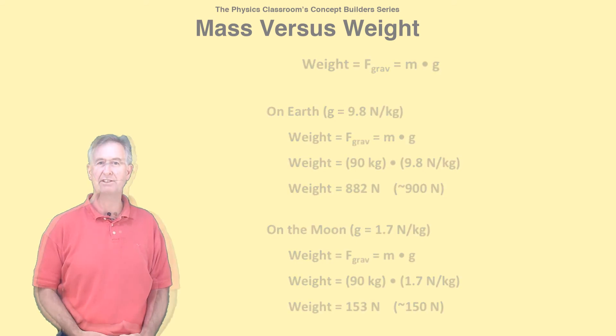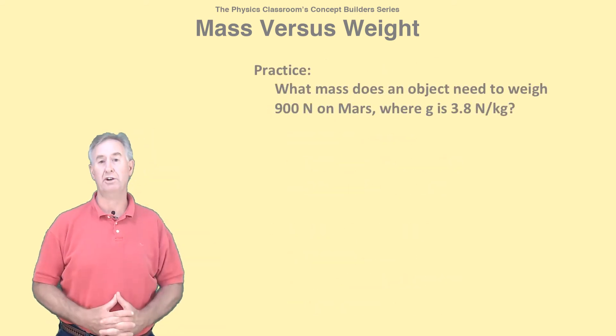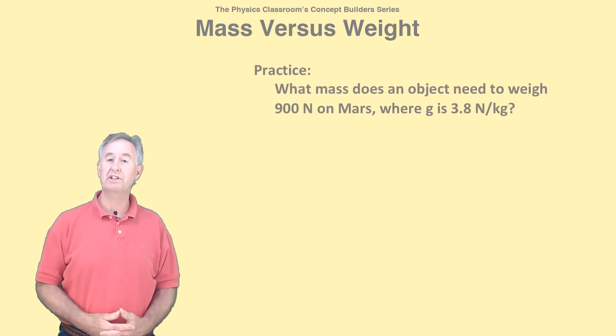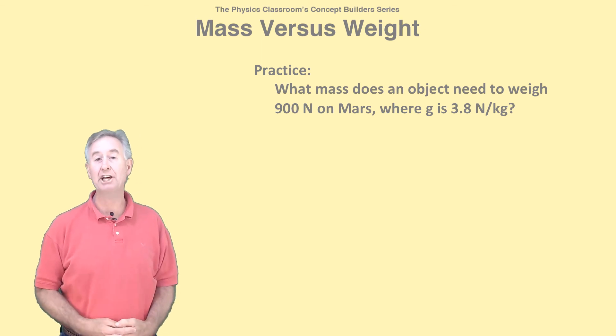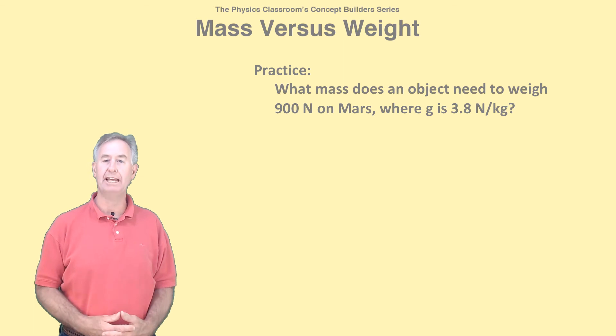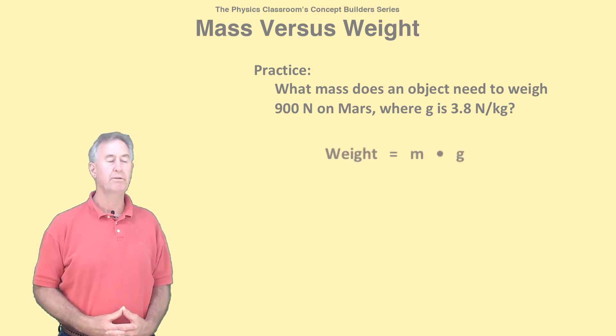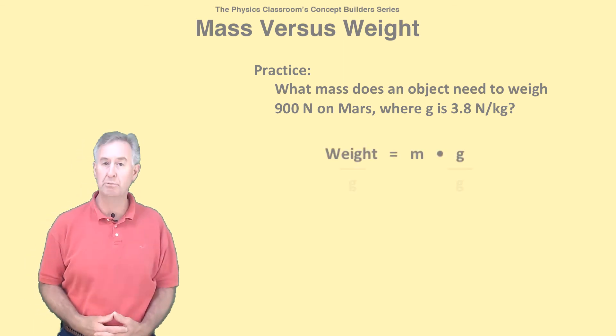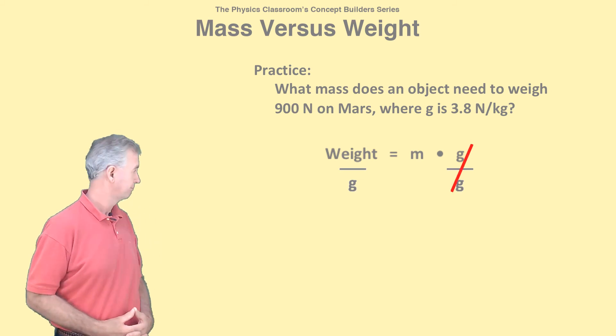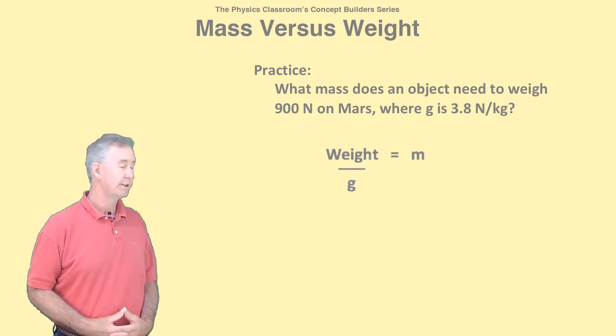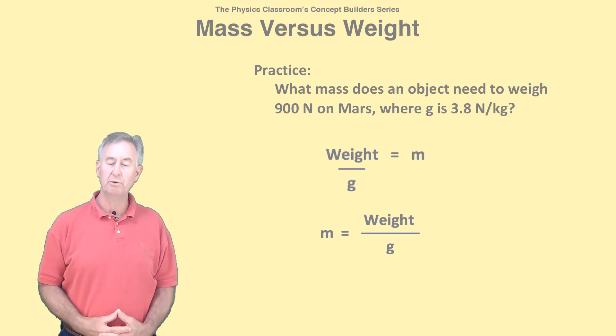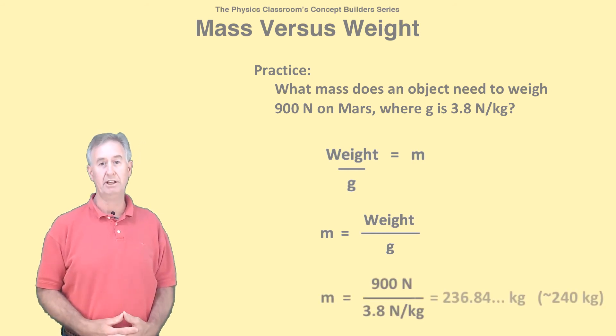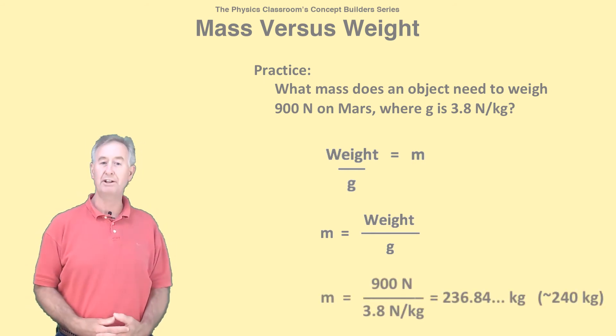Let's try this calculation. What mass does an object need to weigh 900 Newtons on Mars where the value of g is 3.8 Newtons per kilogram? First, we must perform some algebra on our equation. There we go. Now, by substitution, we can calculate the mass to be 240 kilograms.